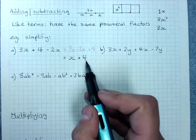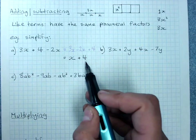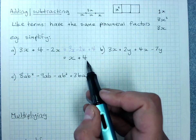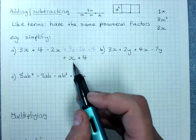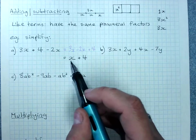These are not like terms. The pronumeral factor here is x. This has no pronumeral factor. It's a constant. I cannot add these together. We're not counting the same thing. This is saying I've got 1 of whatever x is and I've got 4.